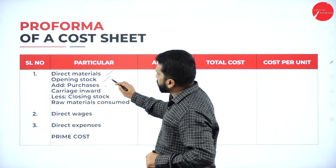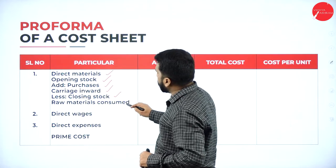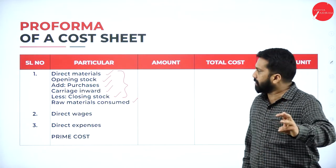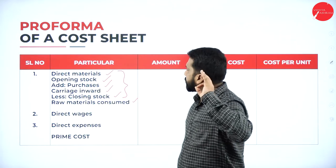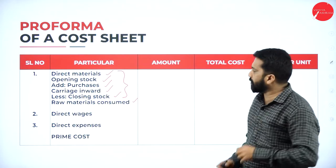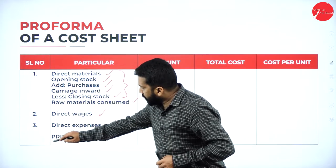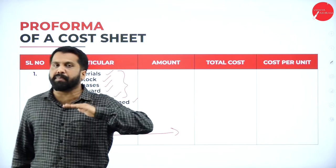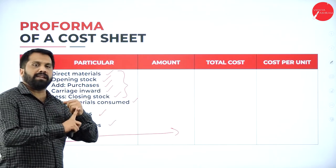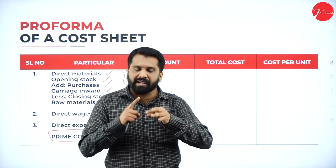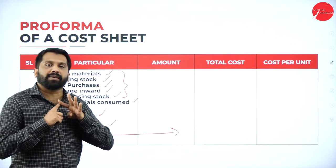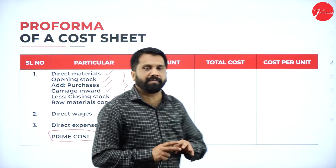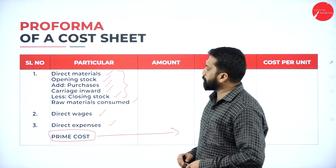Part one is prime cost. Under direct material: opening stock, add purchases, add carriage inward, less closing stock — this gives you raw material consumed. To raw material consumed, add direct wages and direct expenses. Your final answer is called prime cost. So: opening stock + purchases − closing stock = raw material consumed; add direct wages + direct expenses = prime cost. Part one is done.